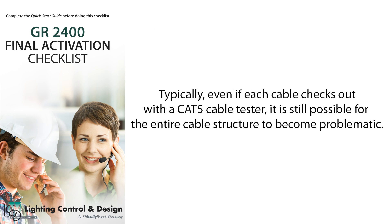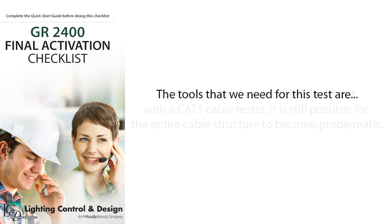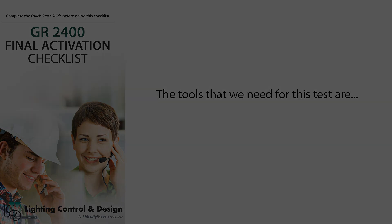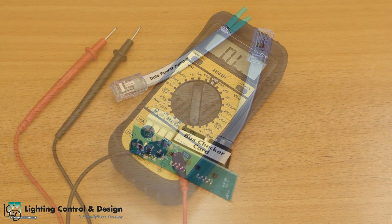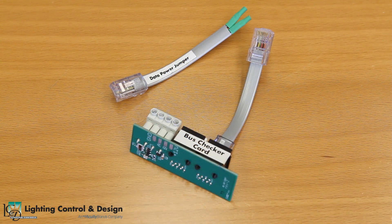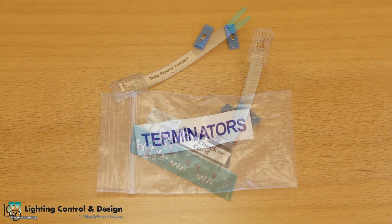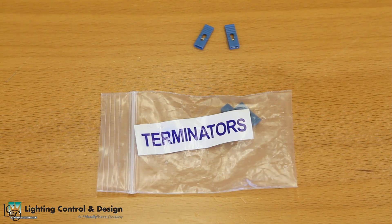Typically, even if each cable checks out with a CAT5 cable tester, it is possible for the entire cable structure to become problematic. The tools that we need for this test are a multimeter, a bus checker card and a data power jumper, and two terminators.